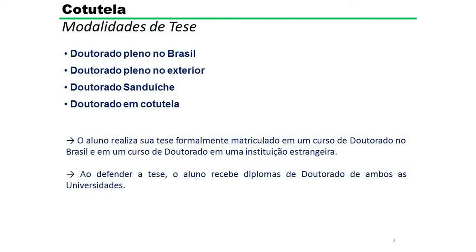Atualmente um aluno brasileiro tem diversas opções para desenvolver a sua tese de doutorado. Por exemplo, o aluno pode fazer um doutorado pleno no Brasil, um doutorado pleno no exterior com uma bolsa do CNPq ou com uma bolsa de uma instituição estrangeira. Ele pode fazer um doutorado em sanduíche, que é feito no Brasil mas com um estágio de 6 a 12 meses numa instituição estrangeira, ou um doutorado em cotutela.